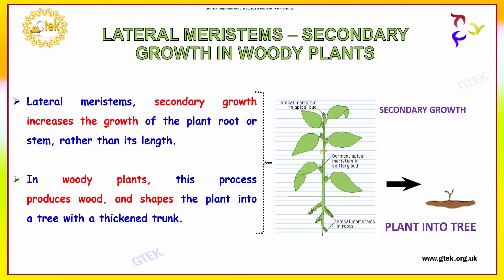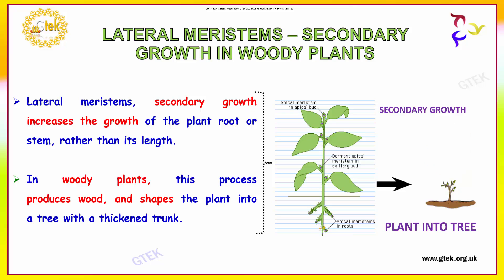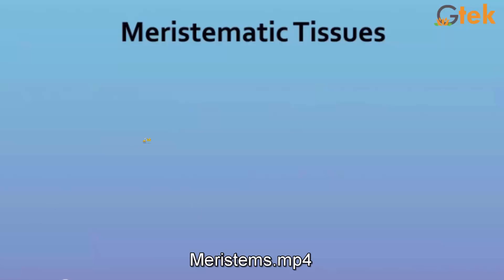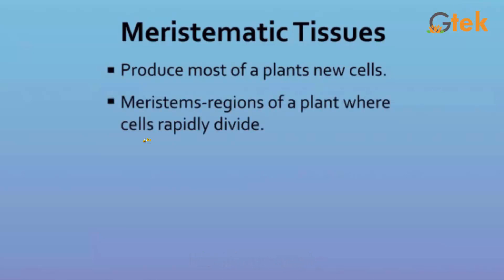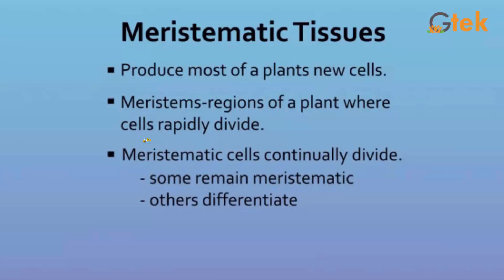Here is the apical meristem, and the apical meristems in roots are shown here. Meristematic tissues produce new cells in plants, and these cells rapidly divide. Some of the divided cells remain meristematic while others differentiate from the meristematic tissues.